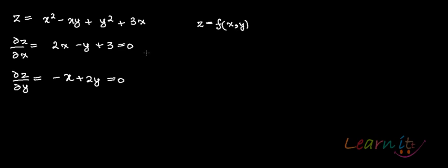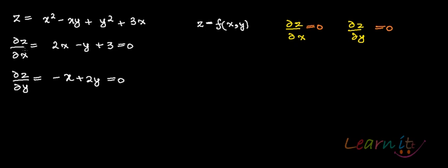How do we calculate the optimal points for this kind of function? Since it is in terms of x and y, we will calculate two partial derivatives — one with respect to x and one with respect to y — and set them equal to 0. These two partial derivatives set equal to 0 give: del z / del x = 2x − y + 3 = 0, and del z / del y = −x + 2y = 0.